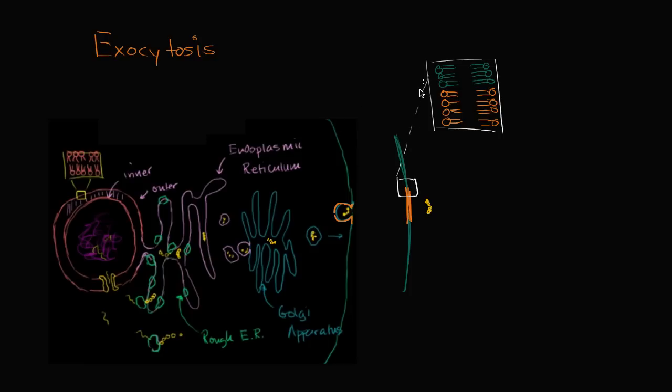And that's what exocytosis is. And one thing that I find interesting is when you first learn about it, you see a diagram like this, and you just assume these bubbles of these membranes, they just randomly must float eventually to the membrane, where they get merged, and then they release their contents. But it actually isn't that chaotic.